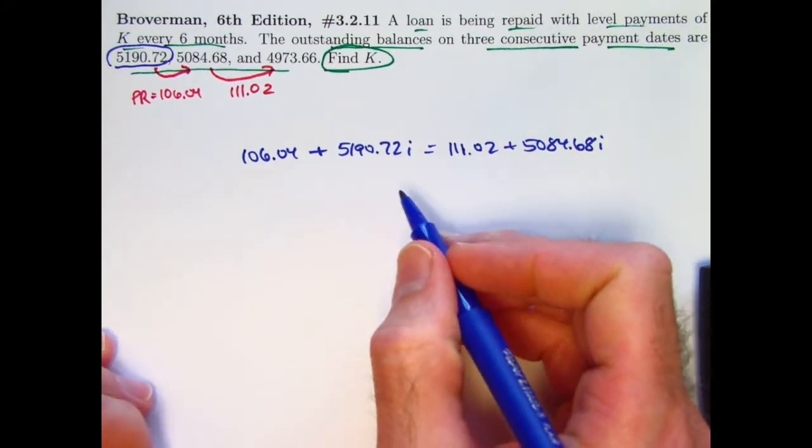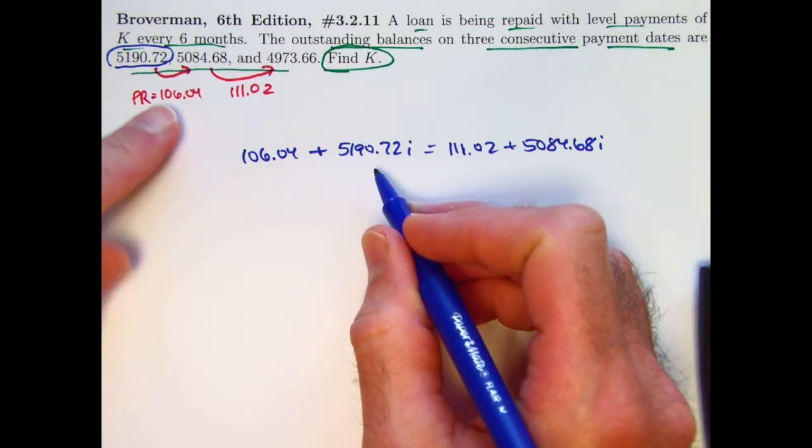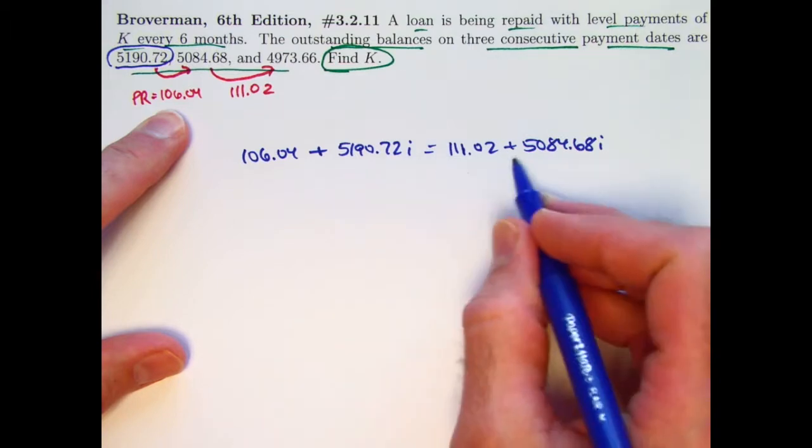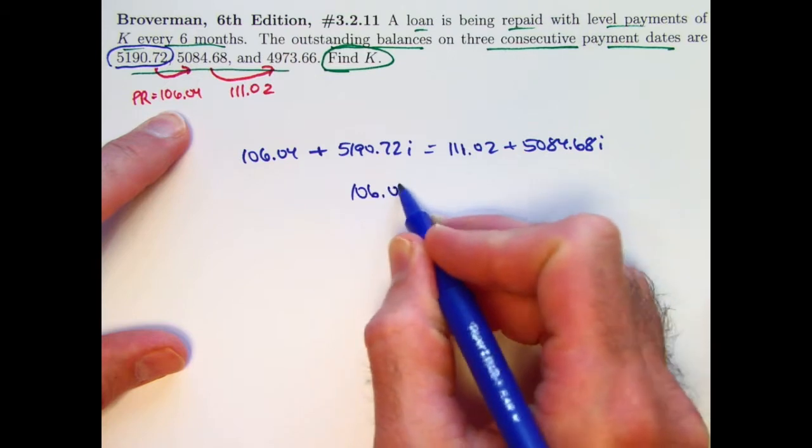Let's see. So I want to isolate I first. Let's get I on the left side. Actually, I can do this in my head based on knowing what this is up here. 5190.72 minus 5084.68, I already know, is 106.04.